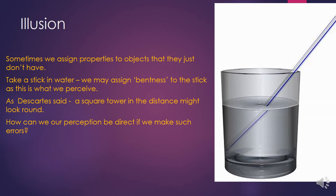Illusion is a problem for the direct realist. The direct realist tells us that what we see is what is out there. But sometimes we assign properties to objects that they just don't have. Take a stick in water — we assign the property of bentness to the stick, as this is what we perceive. And as Descartes said, a square tower in the distance might look round. So how can our perception be direct if we make such errors?